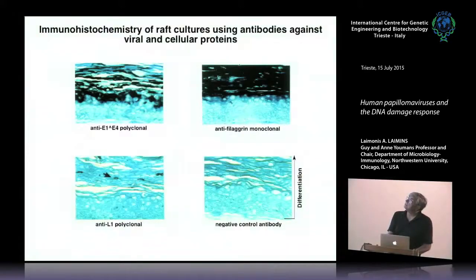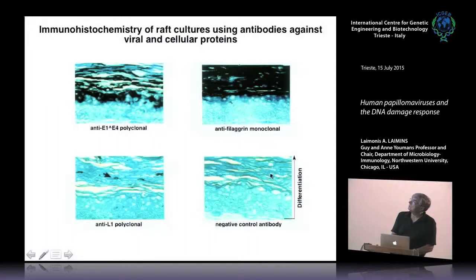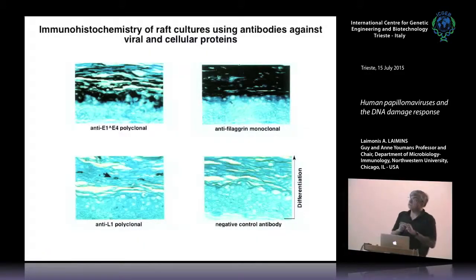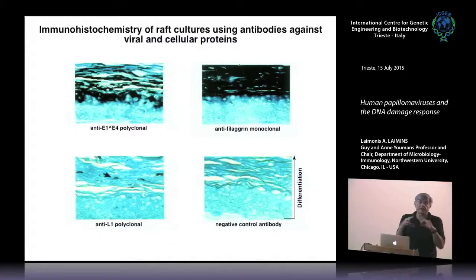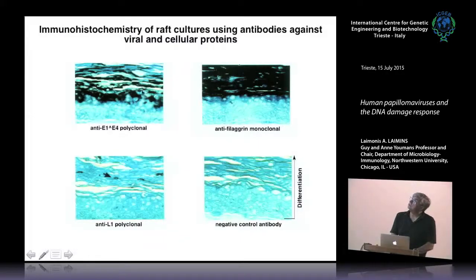If we take these cross-sections and stain with antibodies by immunohistochemistry, here's a raft culture with HPV sequences. We've stained with a marker for differentiation called filagrin, a keratin filament-associated protein. HPV only slightly modifies differentiation—it doesn't totally abrogate it. It allows cells to remain in the cell cycle yet still exhibit markers of differentiation. The E4 protein, one of the most highly expressed viral proteins, is expressed only in the late productive phase. In a subset of those cells, you have capsid protein expression. Not all cells make virus, but a significant number make large amounts.